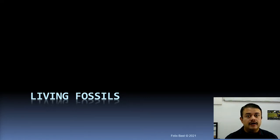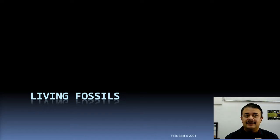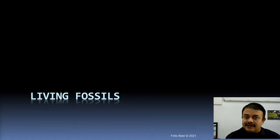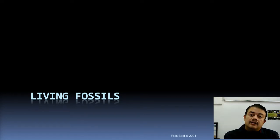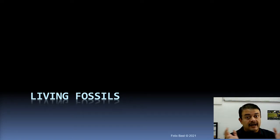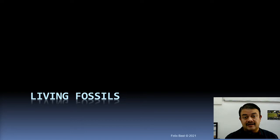Just like human birth and death are unavoidable — an absolute truth — the same applies to species. Whenever a species is formed, it will eventually go extinct. The lifetime between the birth and death of a species can vary among lineages. Some currently living species are really old, and these are called living fossils.